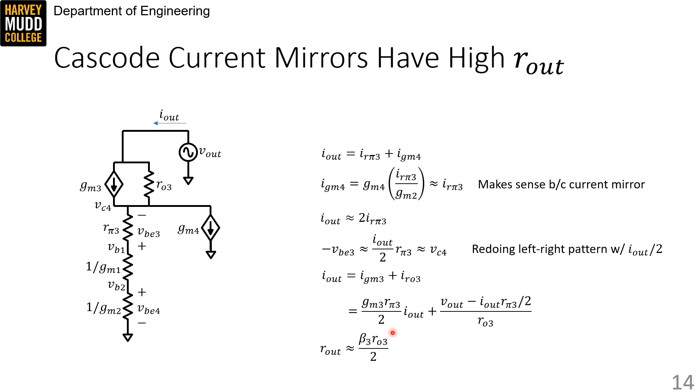And so, you can chase through the math to get the exact answer, but the big takeaway here is that RO is approximately beta3 RO3 over 2. So, one-half the resistance that you'd see in a cascode amplifier. And it's cut in half because of the action of the current mirror at the very bottom of this, the Q2, Q4 mirror.